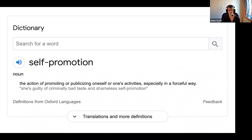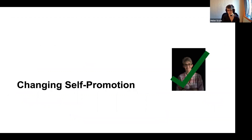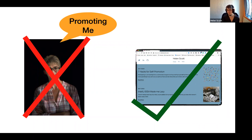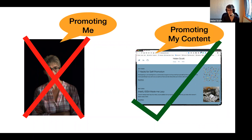So given I had to make it work for me, I went on a little journey of changing self-promotion. Self-promotion by that very definition is me, me, me — I'm so awesome and I'm going to shove it down your throat. That's not where we want to be. So just slightly shifted it: it's not about you, it's about your stuff. It's not so much about promoting me, it's about promoting my content.